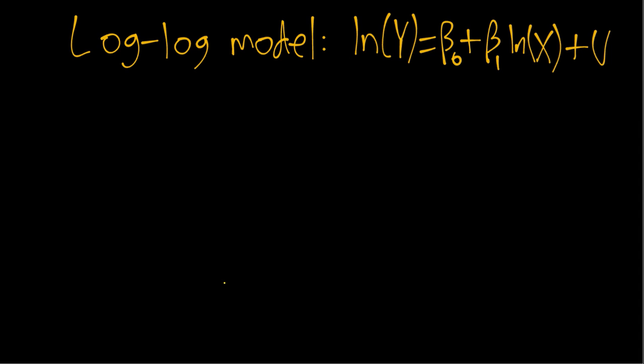So in this case, it sort of combines both of the log parts of the log linear model and the linear log model. The approximate interpretation of beta 1 is that a 1% increase in x is approximately associated with a beta 1% increase in y.